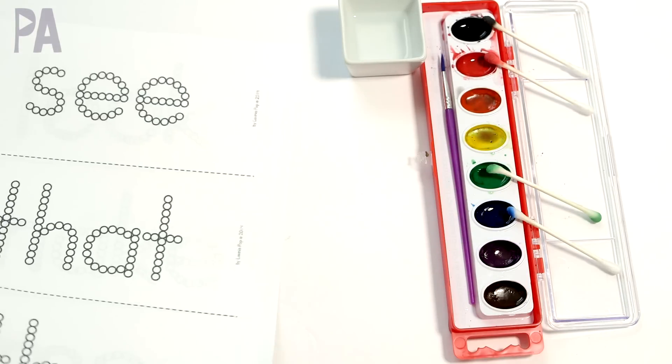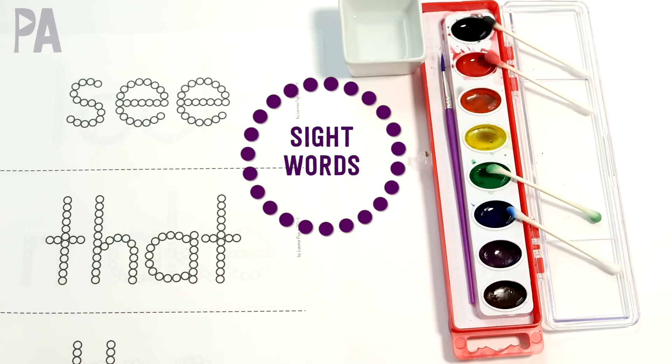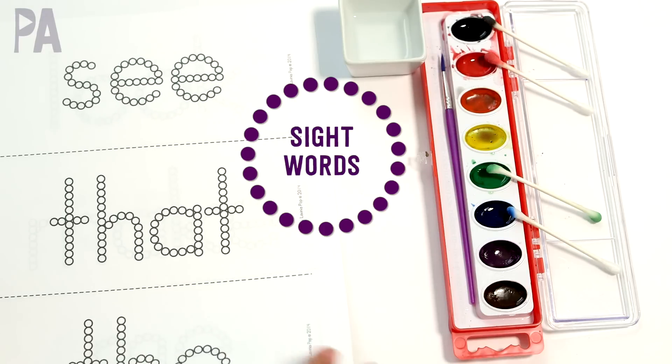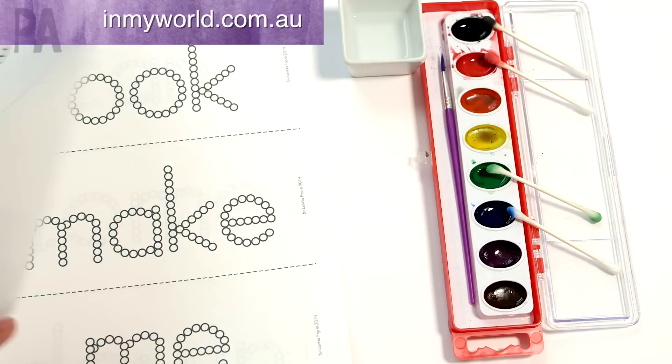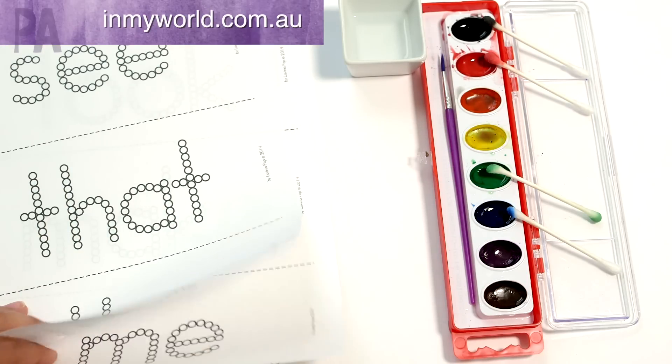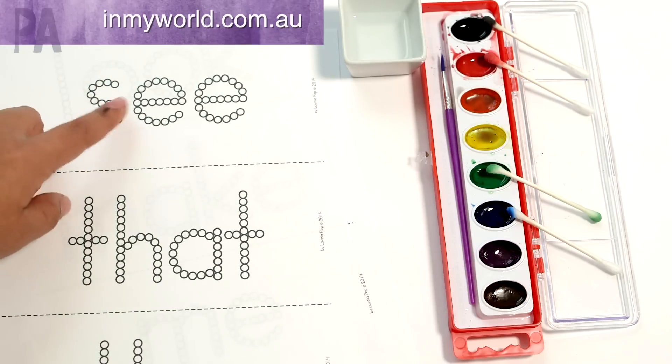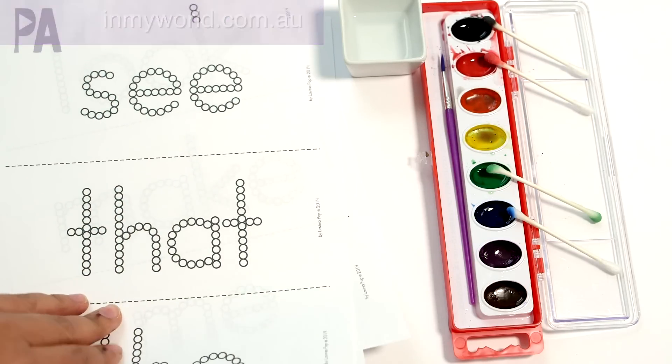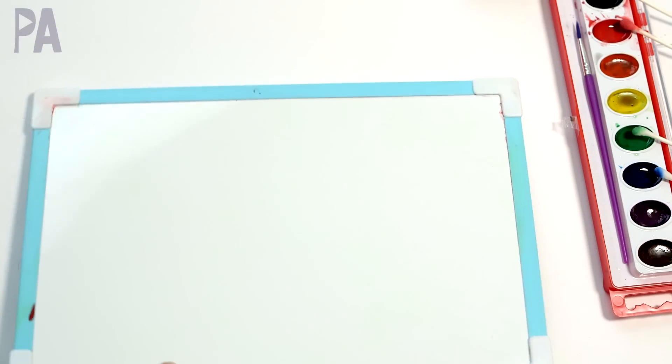So if tracing letters is just a little bit too easy, maybe you're working on things like sight words, this might be a really great option for you. These are from by Lavina Pop and there are a couple of sheets here of just some sight words. You can certainly make your own of these, but you would dot each letter of the word and then use it for sight word practice.